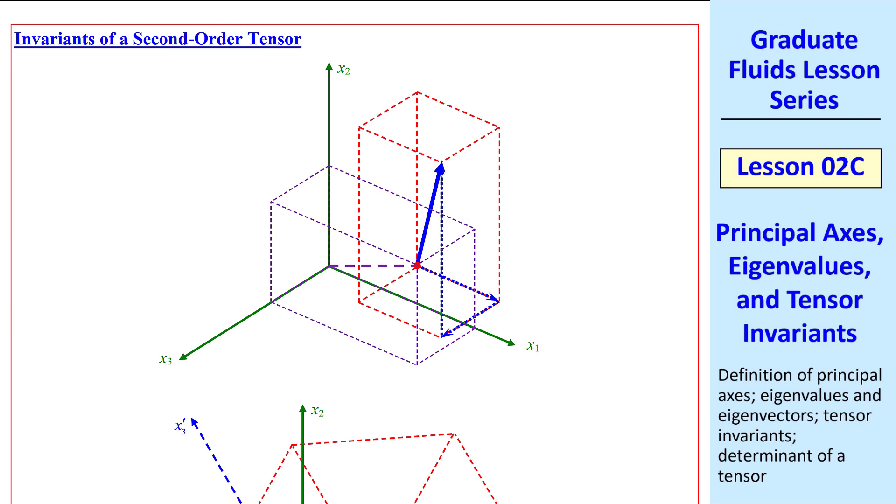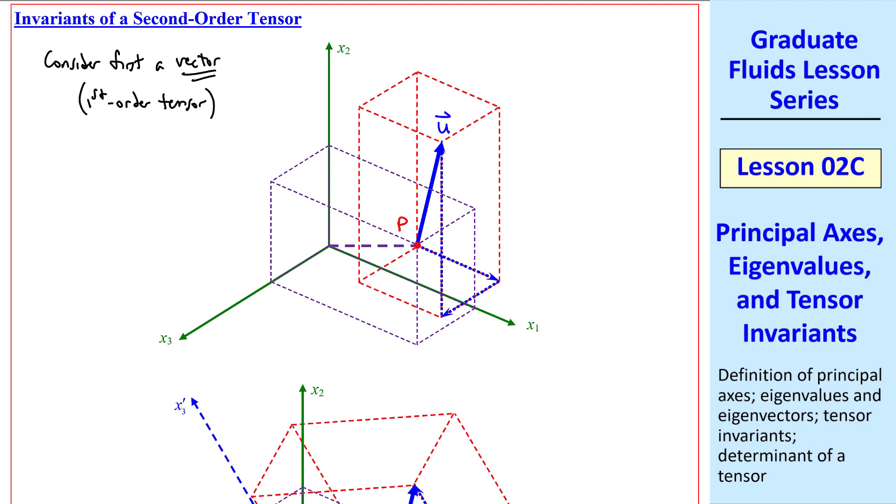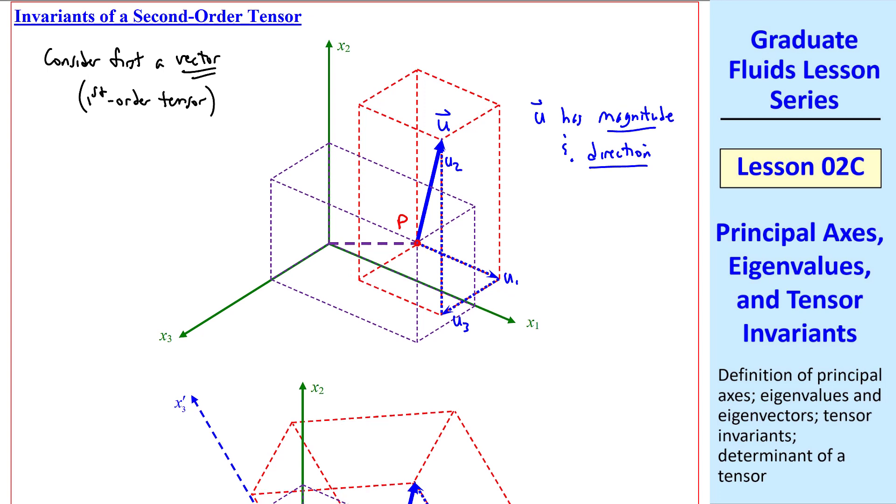Finally, I want to discuss the invariance of a second-order tensor. Consider first a vector, which is a first-order tensor. At some point, P in the flow, suppose this is our velocity vector u. U has both magnitude and direction. And this is our original coordinate system, x1, x2, x3. Again, I use a box to try to help you visualize this in three dimensions. The components here are u1, u2, and u3, as represented by the dashed blue lines. Those vectorially sum up to u.